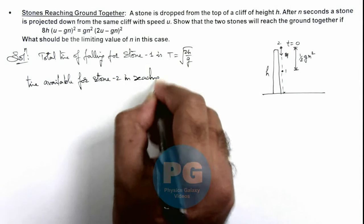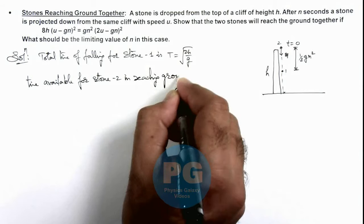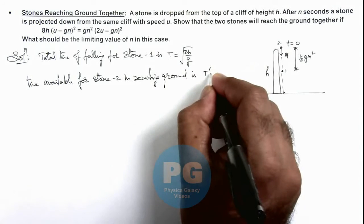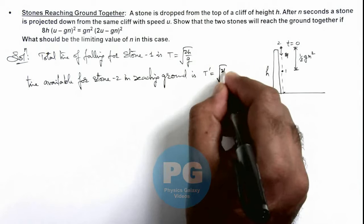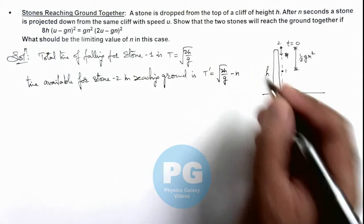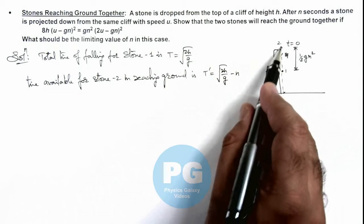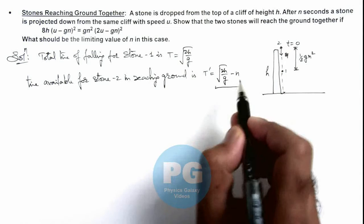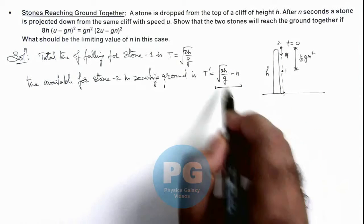In reaching ground, this time we can write as t dash, which is root 2h by g minus n, because after this projection stone 1 will reach ground within this much time. That means stone 2 also has to reach ground in this duration.